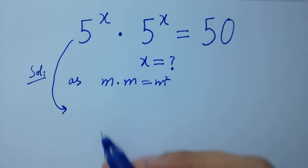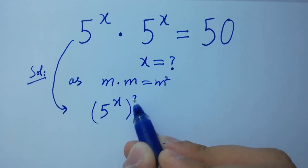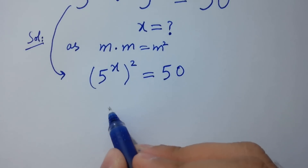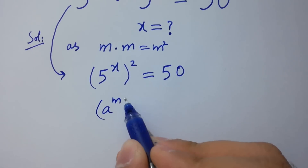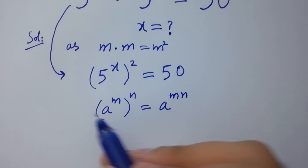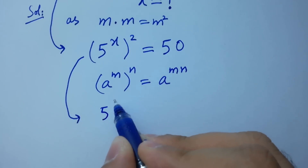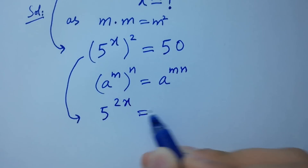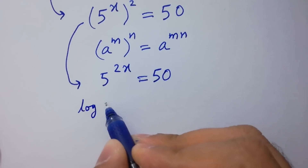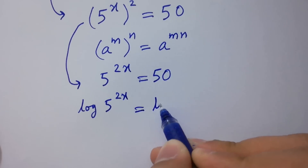Then it will be 5 to the power x, to the whole power 2, equal to 50. Using the rule a to the power m to the whole power n equals a to the power m times n, we have 5 to the power 2x equal to 50.